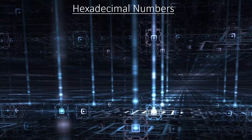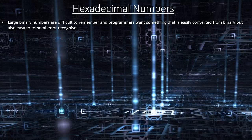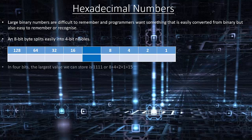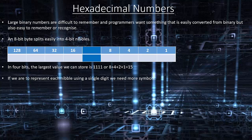Hexadecimal numbers. Large binary numbers are difficult to remember and programmers want something that is easily converted from binary but also easy to remember or recognise. An 8-bit byte splits easily into two 4-bit nibbles. In 4 bits the largest value we can store is 1111, which is 8 plus 4 plus 2 plus 1 equals 15. If we are to represent each nibble using a single digit we need more symbols. In hexadecimal we use the letters A to F to represent the base 10 numbers 10 to 15.